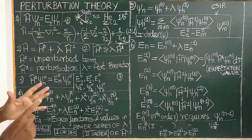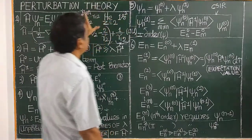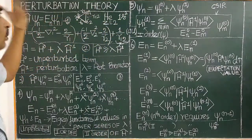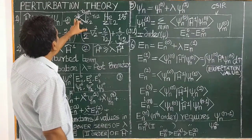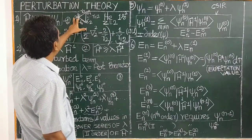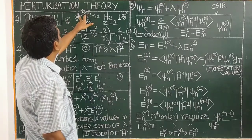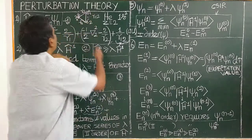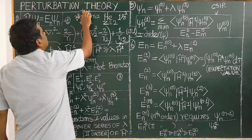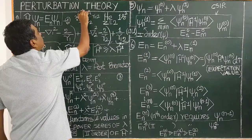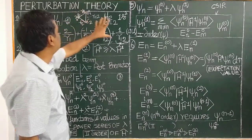Let us consider the simplest multi-electron atom: helium. It consists of two electrons — more than one electron. The charge on the nucleus is plus 2e. The distance between the nucleus and electron 1 is R1, the distance to electron 2 is R2, and the distance between the two electrons is R12.